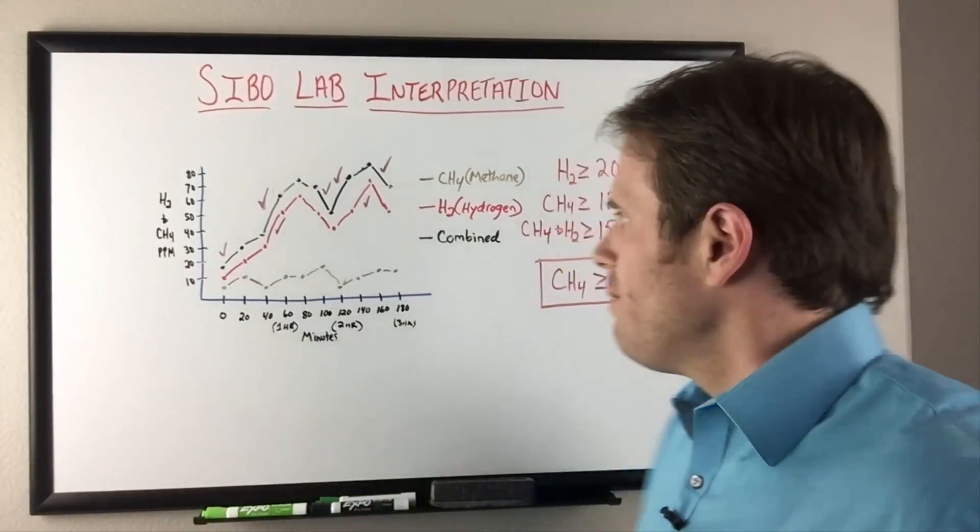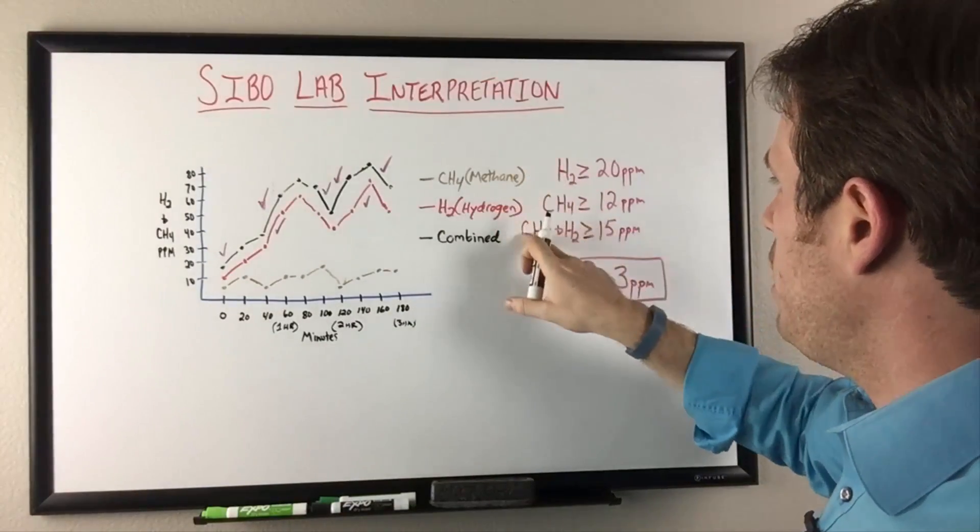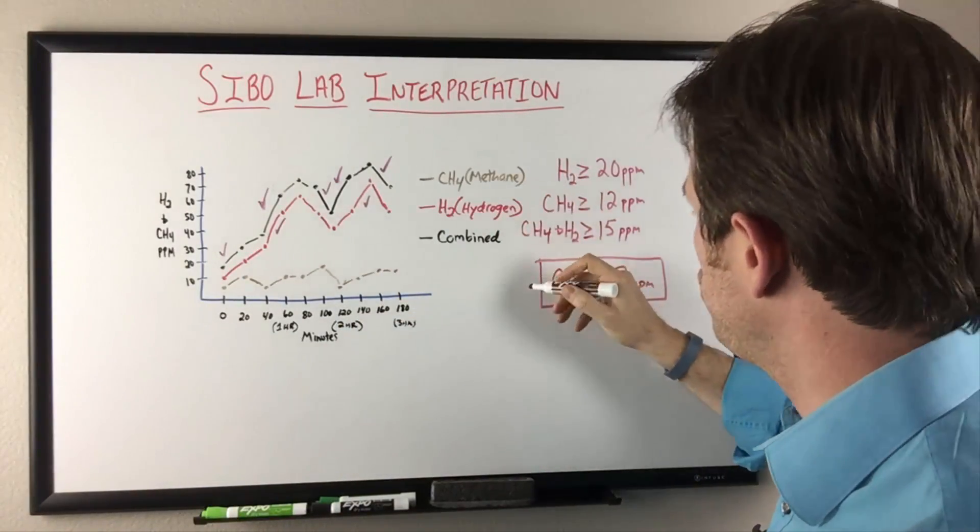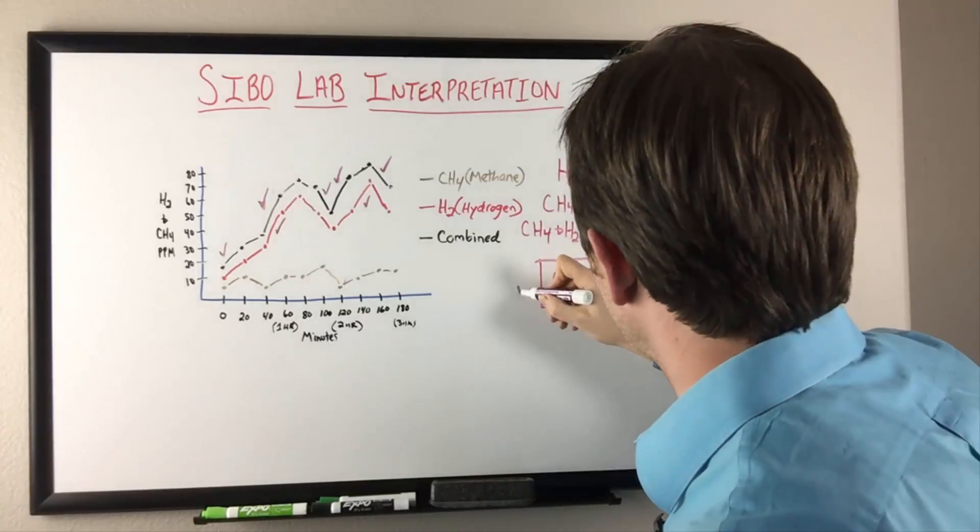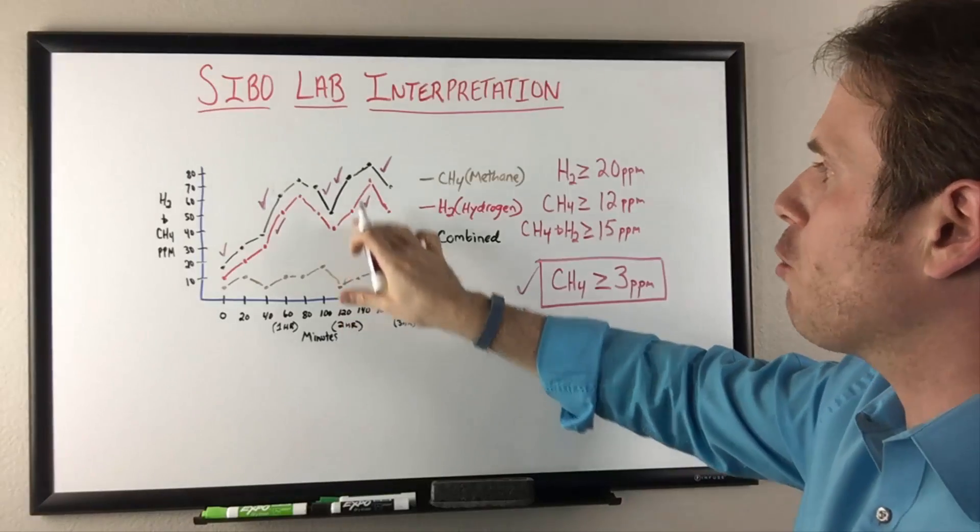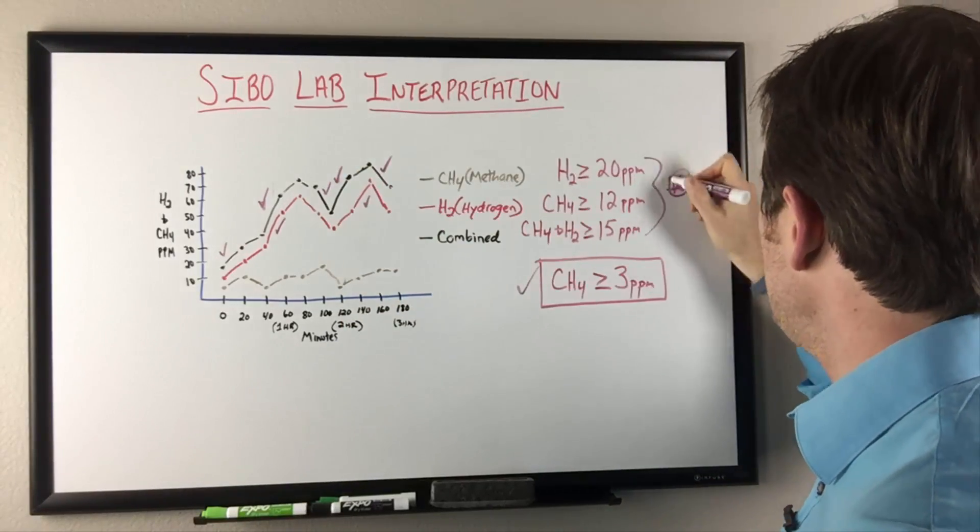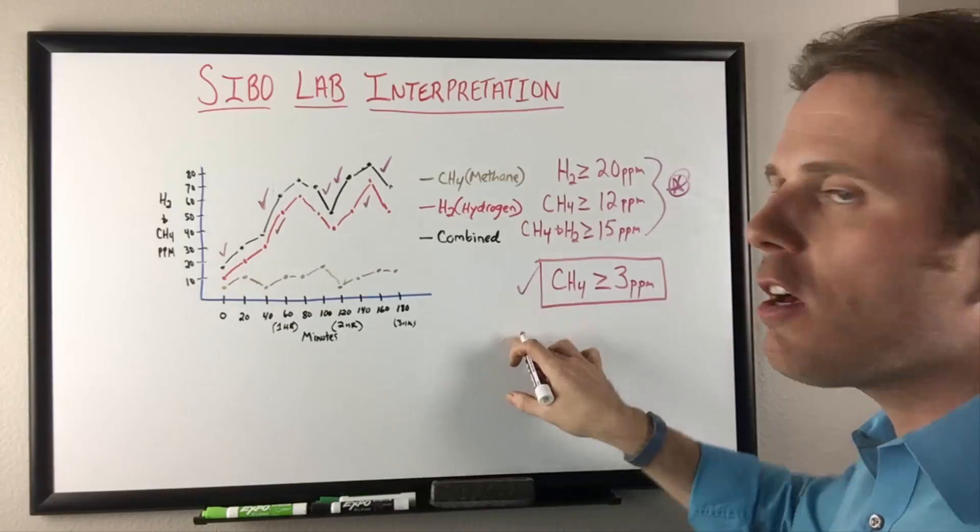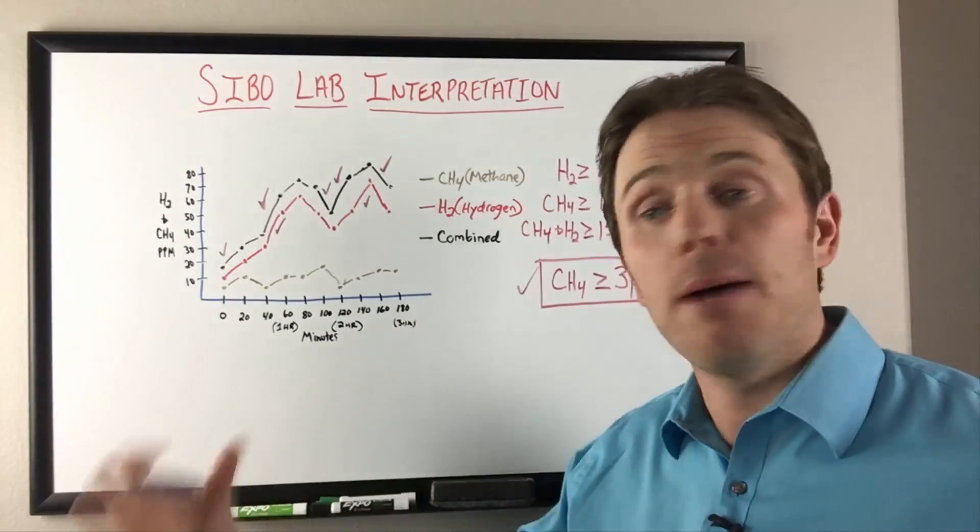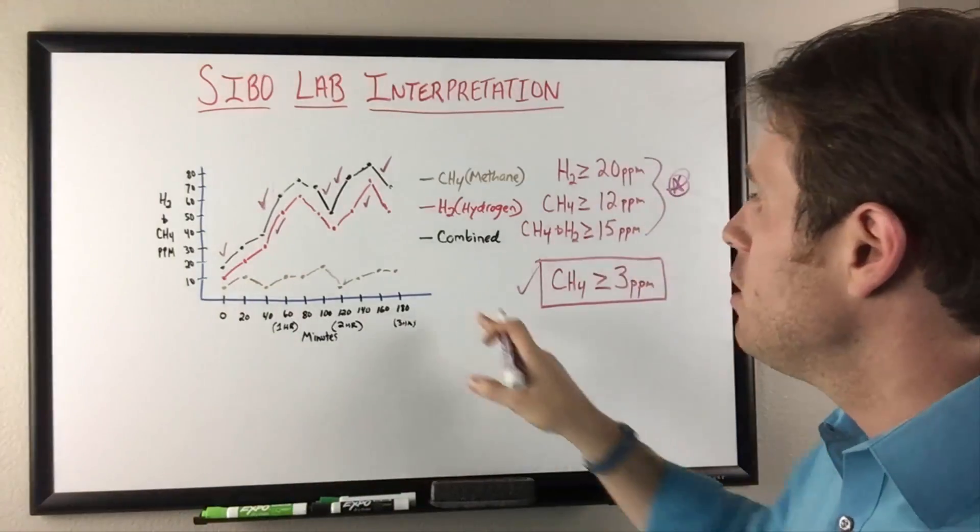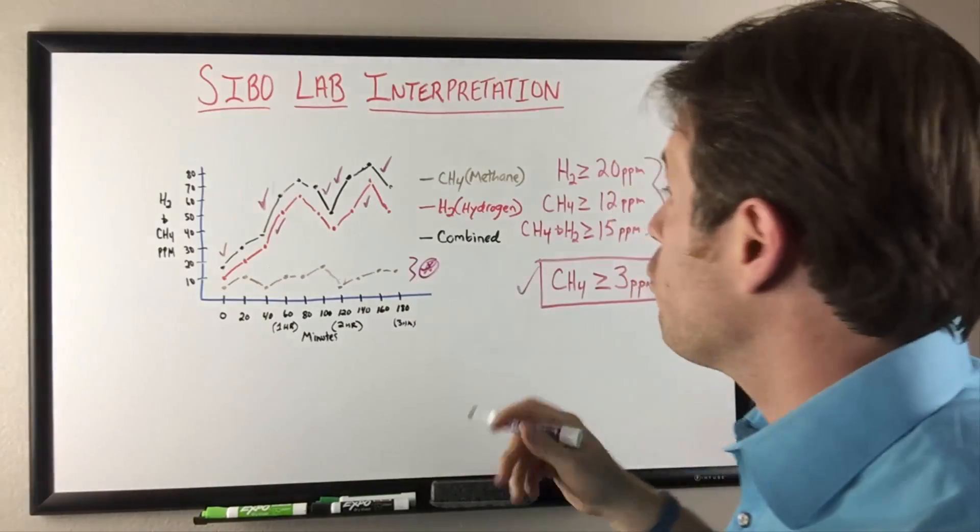But if we use a more sensitive marker that Alison Seebecker and Dr. Sandberg-Lewis use, the methane three or greater, this would still be considered positive because we started out at five off the bat. I just want everyone to be open here that you may not have anything show up here, but you may have one of these more sensitive readings show up, and that may make all the difference for figuring out that something's going on. It may not be your classic SIBO diagnosis. This may be your more subtle subclinical diagnosis with three or greater on the PPM for the hydrogen and methane.